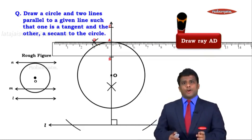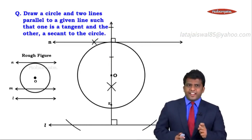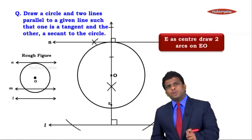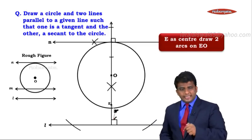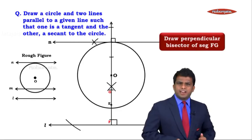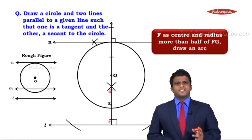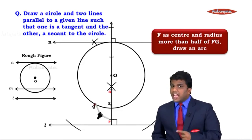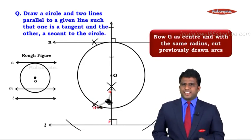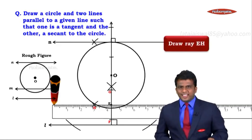Now consider point E somewhere inside the circle on line OA. At point E, we again draw two arcs on either side of the line with any suitable radius to get segment GF. We draw the perpendicular bisector of GF: place the pointer at F, take radius more than half of FG, cut an arc. With the same radius at G, cut an intersecting arc to get point H. We draw ray EH, giving us another perpendicular.